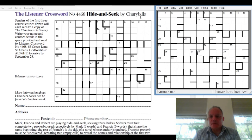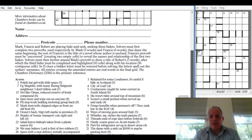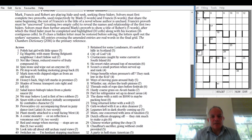The puzzle is called Hide and Seek by Charybdis, a setter I've certainly heard of before. Let's read the preamble. Mark, Francis and Robert are playing hide-and-seek, seeking three hiders. Solvers must first complete two proverbs used respectively by Mark (five words) and Francis (six words) that share the same beginning. The rest of Francis's is the title of a novel whose author is unclued.